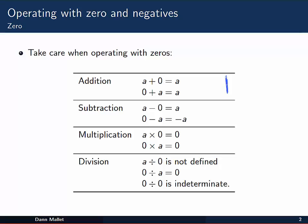When you are adding something to zero, it doesn't change the thing. a plus zero is still a. Seven plus zero is seven, for example.